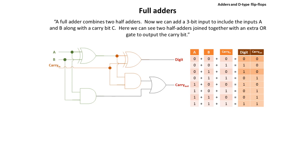So now, if we have 0, 0, and a carry of 0, we end up with 0. 0, 0, and 1 gives a value of 1. 0, 1, and 0 gives a value of 1. 0, 1, and a carry of 1 obviously gives us 2, or 1 0, so we'd output 0 into the column and carry the 1.